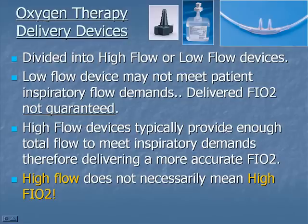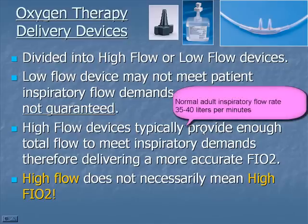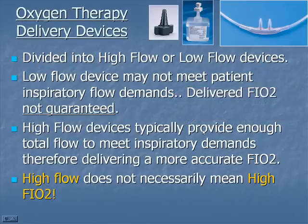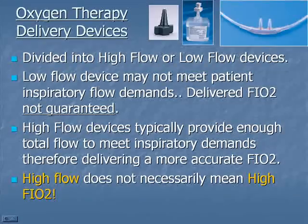A normal adult inspiratory flow rate is somewhere between 35 and 40 liters per minute. In order to guarantee an FiO2 as we provide oxygen to a patient, we need to at least meet that level of flow. If we don't, then depending on the device, we will entrain room air and the FiO2 may not be accurate.